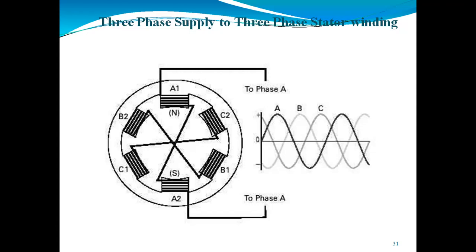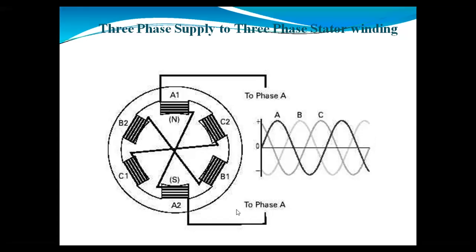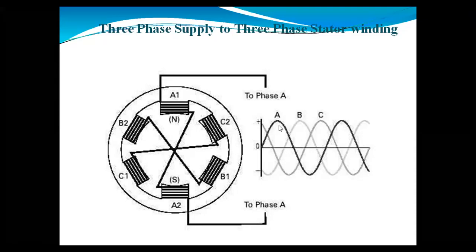Here I have drawn the diagram. When we are giving the three-phase supply to the stator winding, we divide 360 degrees into three phases — 120 degrees each. We use the R, Y, and B phase sequence: R for red, Y for yellow, and B for blue. Here I am using the letters A, B, C, but A corresponds to the red wire.